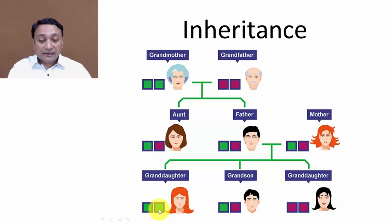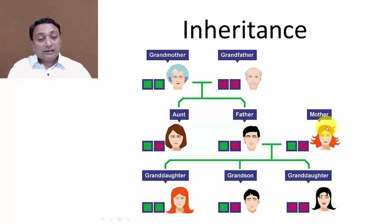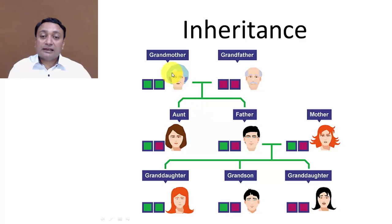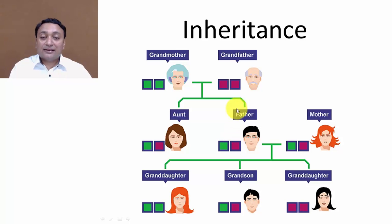Similarly, this right green property is inherited from her mother, and her mother got this property from her maternal mother. So this grandson is getting this green property from his father, and ultimately from his grandparents. Similarly, this granddaughter is getting the magenta property from her father and grandfather.